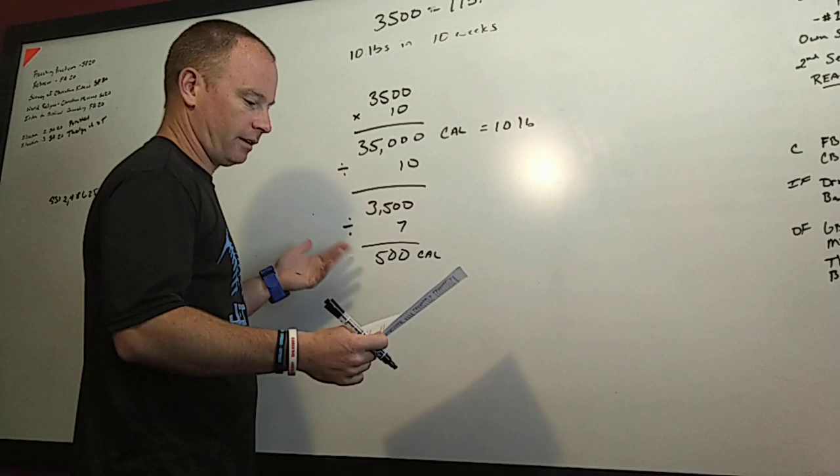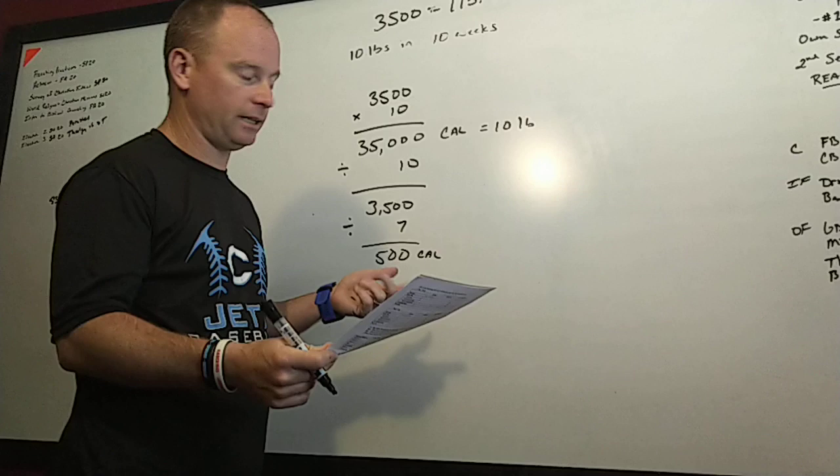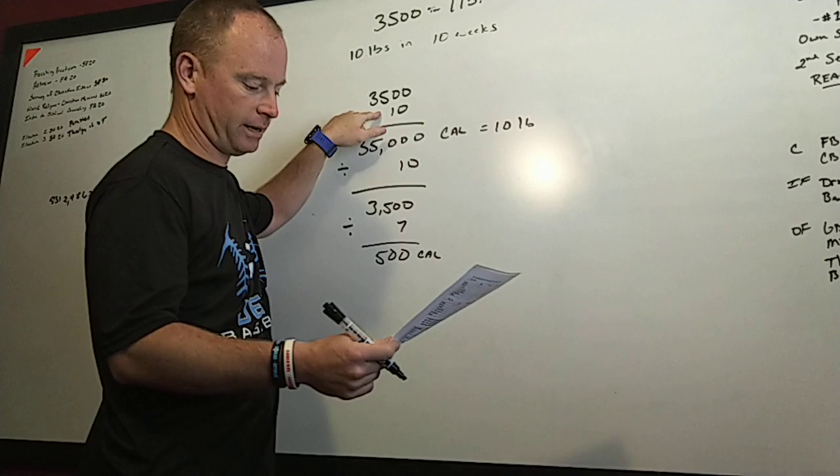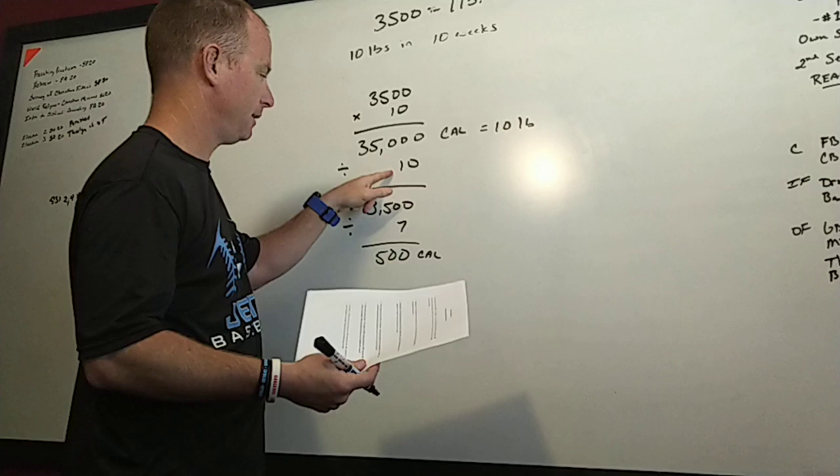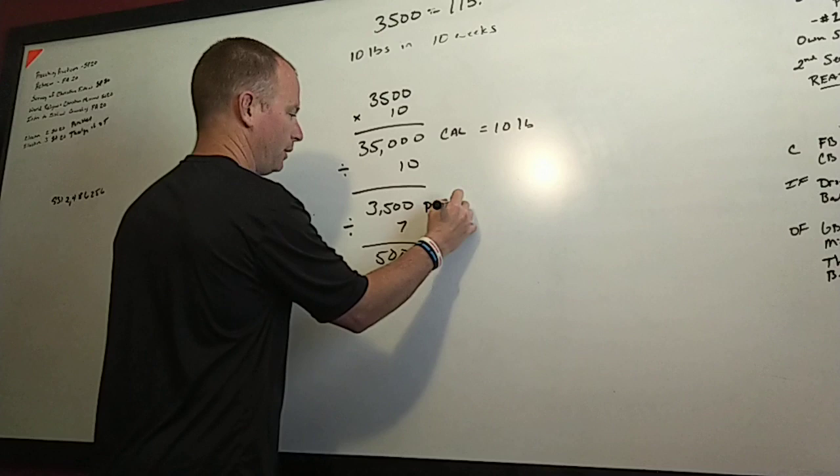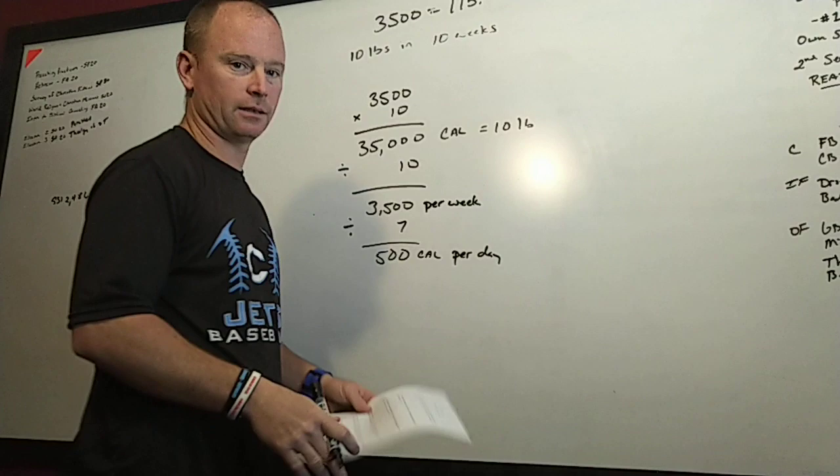If she wants to lose 10 pounds in 10 weeks, how many calories are equivalent to 10 pounds? That's 35,000, because we took the 3,500, which is one pound, and multiplied it by 10. What would her calorie deficit have to average per week? In the whole 10 weeks she's got to have a deficit of 35,000, so we divide that by 10. That takes it down to on a weekly basis, and that is 3,500 per week. We took it just for fun even down further, and that would be per day.